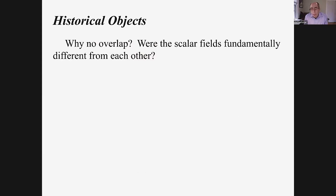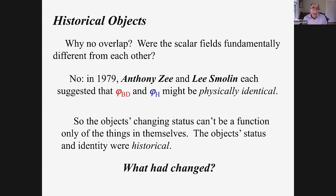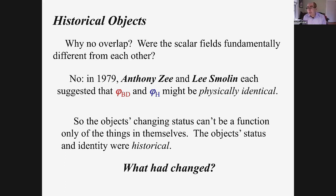So why was there such a sharp divide? Were these fields just different? Actually, as we'll see in the third part for today, in 1979 two separate theorists working independently suggested these two fields might be literally the same - not just comparable, but they developed a model which depended on these two fields being literally the same field, only one new field of nature, not two. So it's not that they're intrinsically totally separate. Instead their status is really historical - how people assessed them was changing over time. That's what we'll pick up in the next part.